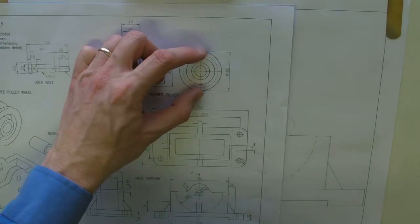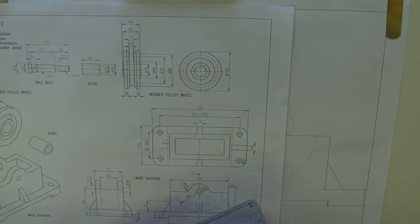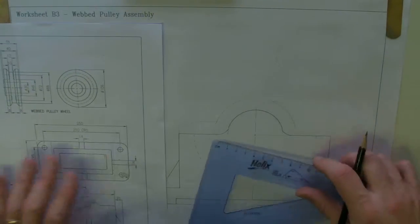Right, the radius of the outside of it is half of 106, so that's 53. Okay, so we're going to set our compass to 53.